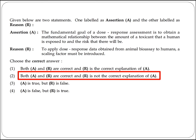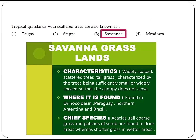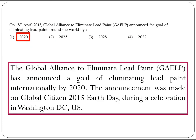The answer is Option B: both A and R are correct, but R is not the correct explanation of A. The next question asks about tropical grassland with scattered trees, which are also known as savanna. Option 3 is the right answer.